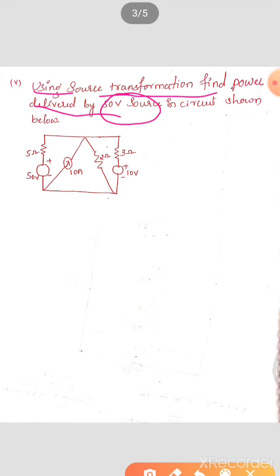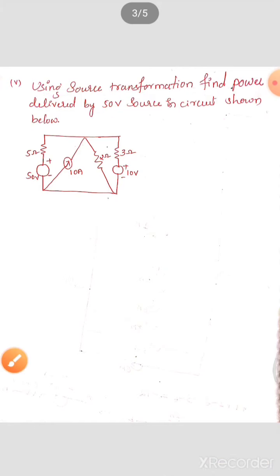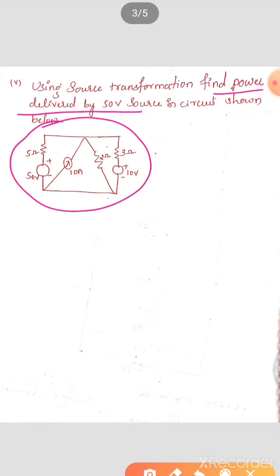So, what are those sources that can be transformed? One is a voltage source which you can convert into a current source, and a current source you can transform into a voltage source. Now, this source transformation technique we are going to apply on practical voltage sources and practical current sources. Let us convert one to another — voltage source into current source.